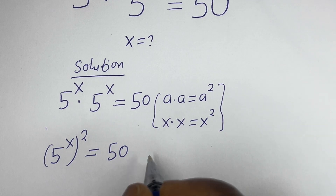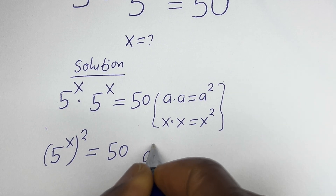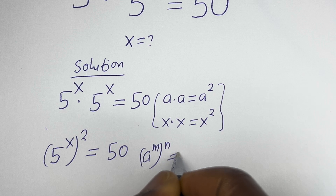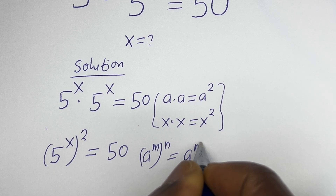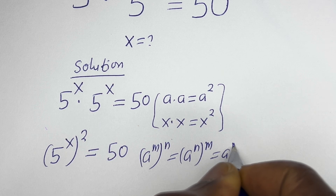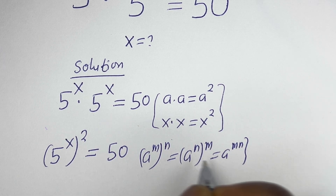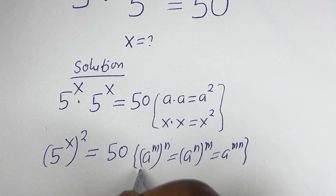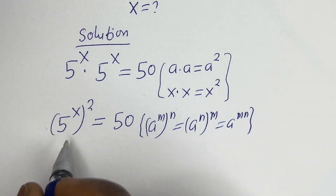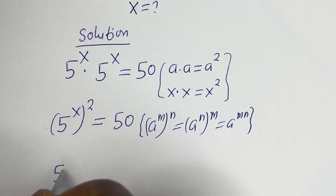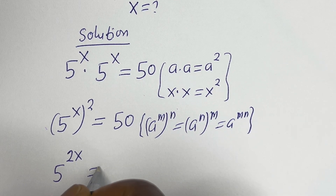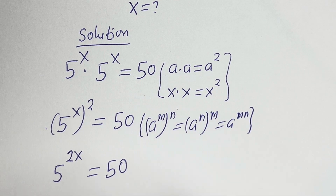Also, take note that if you have a to the power of m to the power of n, this is equal to a to the power of n to the power of m, which equals a to the power of m·n. Then this can be written as 5 to the power of 2s is equal to 50.